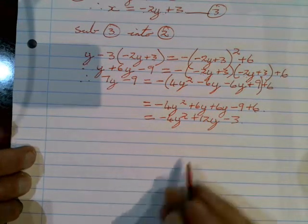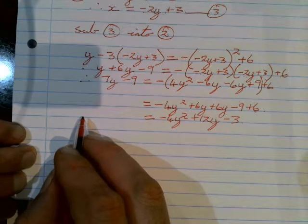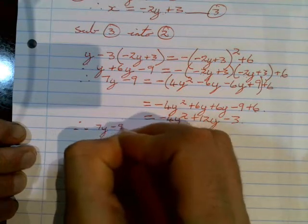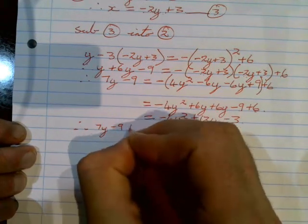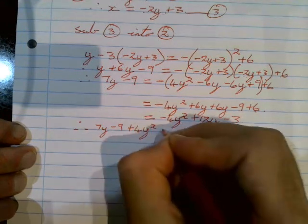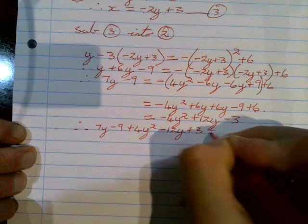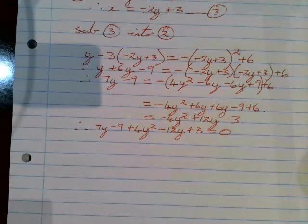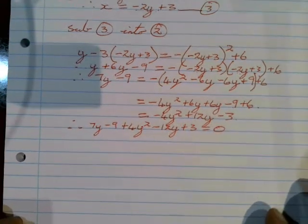We want to get everything to one side of our equal sign so that we can solve for y. Our 7y minus 9 is already on that side, so we take everything else over, giving us 4y squared minus 12y plus 3 equals zero. Now we're going to identify our like terms — if you struggle with this, use a few shapes just to help identify them.